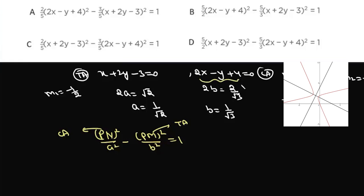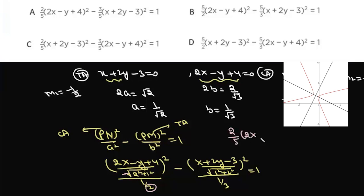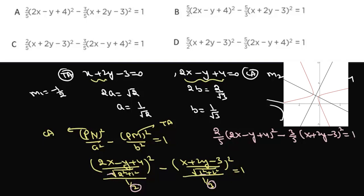Substituting: distance from conjugate axis is (2x - y + 4)/√5 and from transverse axis is (x + 2y - 3)/√5. With a² = 1/2 and b² = 1/3, simplifying gives 2/5·(2x - y + 4)² - 3/5·(x + 2y - 3)² = 1, which is option A.